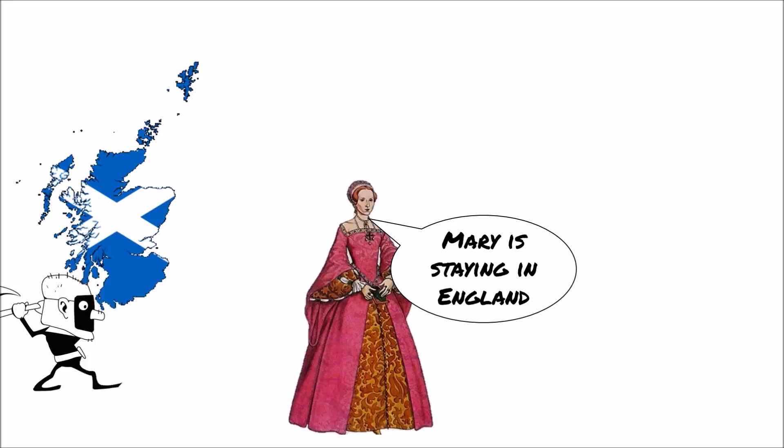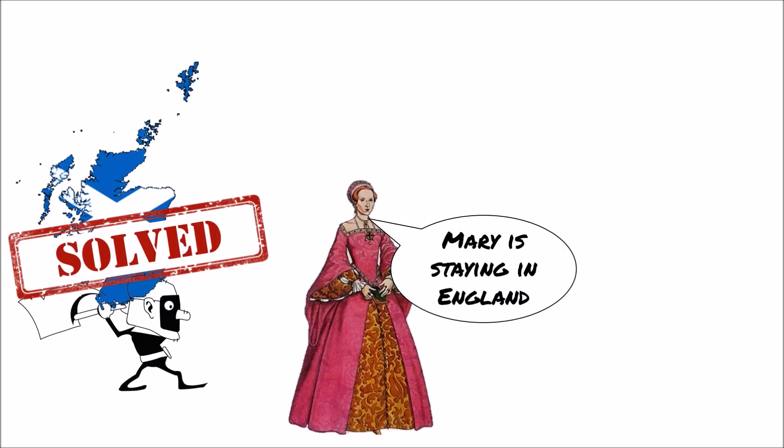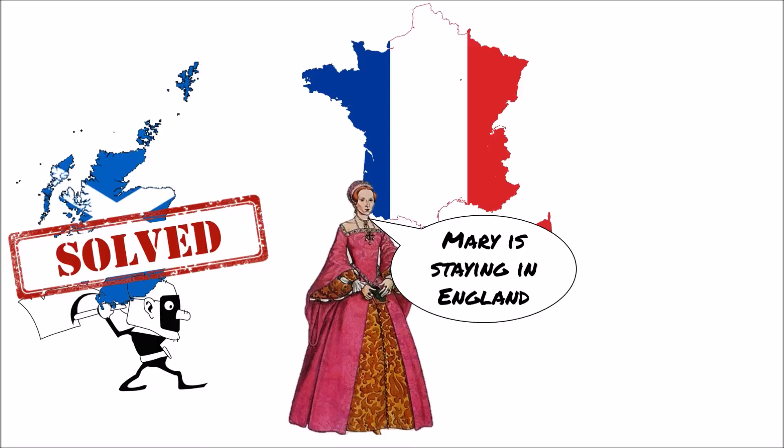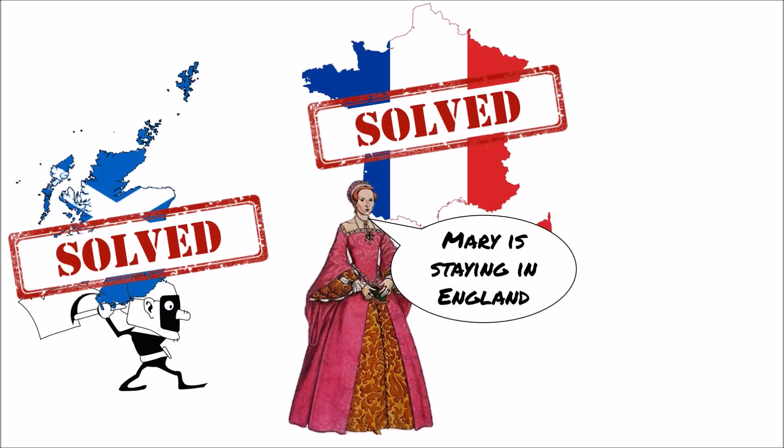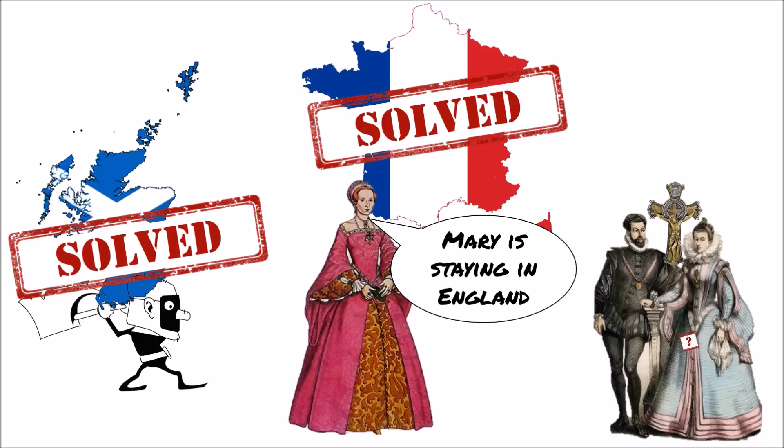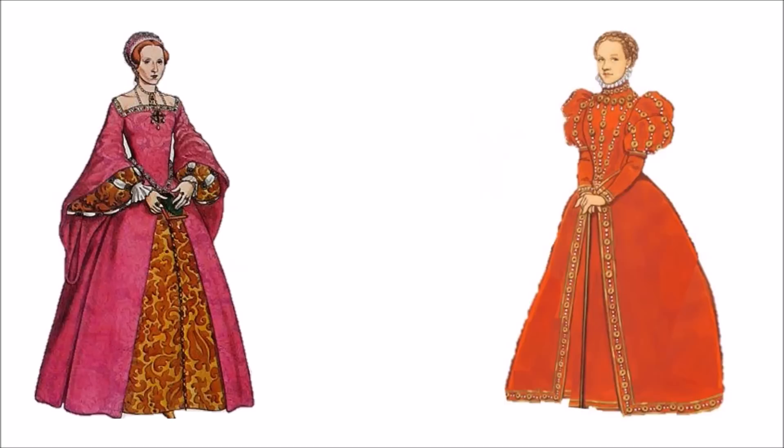By not handing over Mary, Elizabeth ensured that the Scottish nobility would not imprison or execute Mary — which she wanted to avoid because it sets a dangerous precedent for the way you treat monarchs. The French would be satisfied because Mary is not being sent back to face her death. However, Mary staying in England means she remains a threat to Elizabeth, because any plots against her — especially those involving Catholics — would be aimed at removing Elizabeth and placing Mary on the throne.